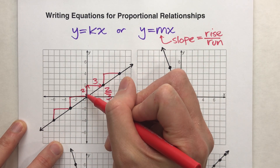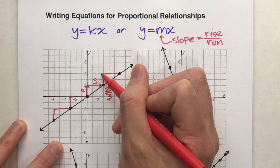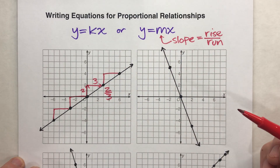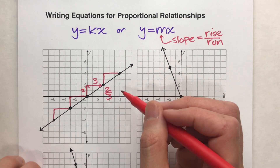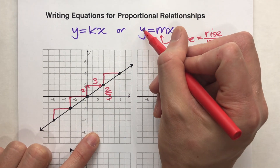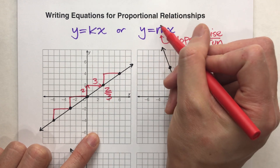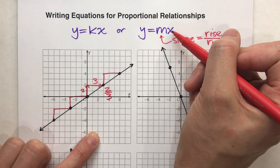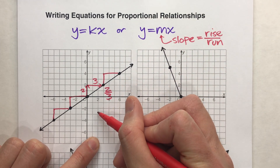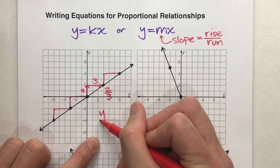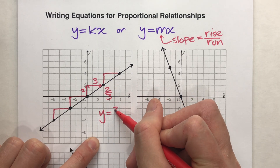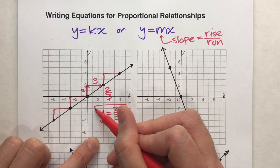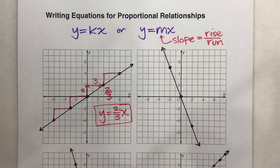Every time it's up two, right three — it's consistent the entire time. It doesn't matter which two points you pick. To write your equation, all we do is write y equals whatever the slope was that we just found, which is two-thirds, and multiply it by x. So our equation here is y equals two-thirds times x.